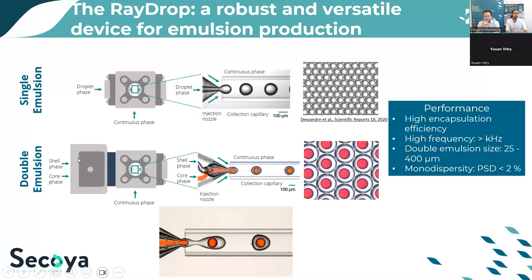For double emulsion, the principle is the same with one key difference at the inlet: the nozzle is a coaxial double nozzle — one inner nozzle containing the core phase to generate the core droplet, and another outer nozzle carrying the shell phase to generate the shell droplet. Using the same shear-based principle, double emulsions are generated in the same way.